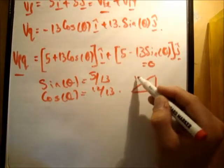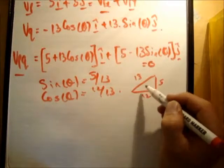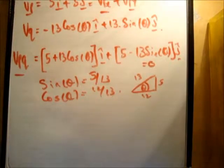So we have 13, 12, and 5. That's nothing we haven't done before.